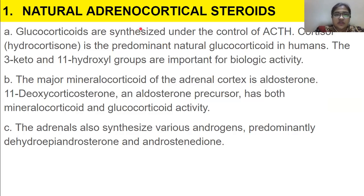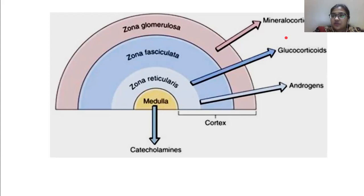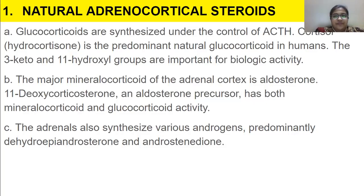Natural adrenal corticoids — the glucocorticoids — are synthesized under the control of ACTH. ACTH is sent to the adrenal gland, stimulating production of corticosteroids. The word 'corticosteroid' itself tells you the composition: produced by the cortex and steroidal in nature. Cortisol, also called hydrocortisone, is the predominant natural glucocorticoid in humans; the 3-keto and 11-hydroxy groups are important for its biological activity.